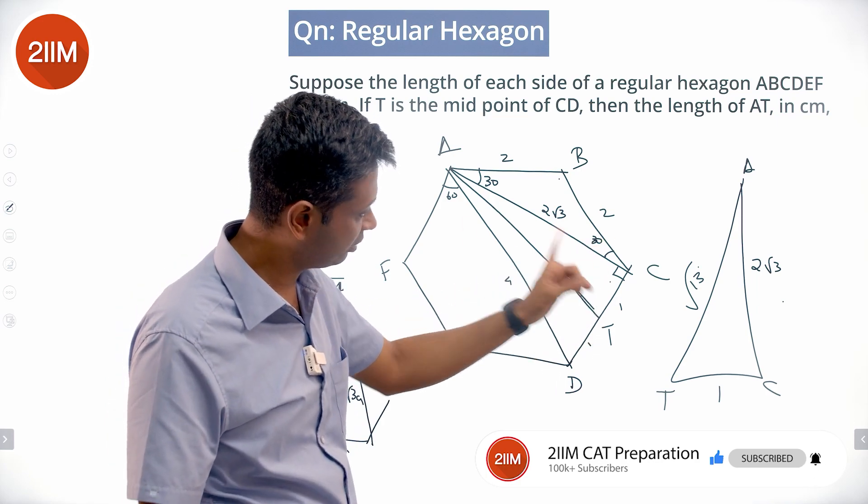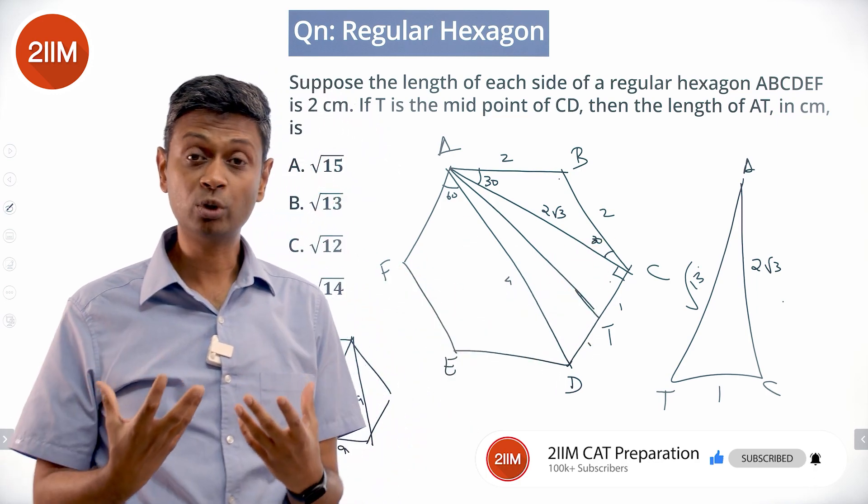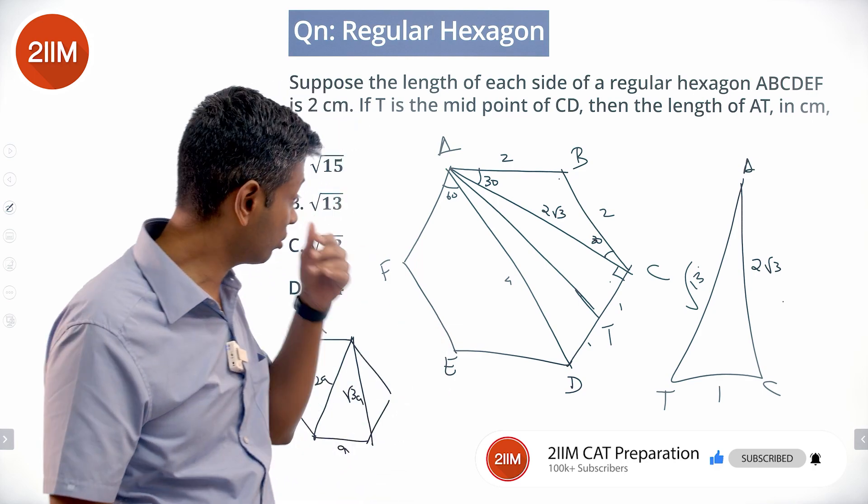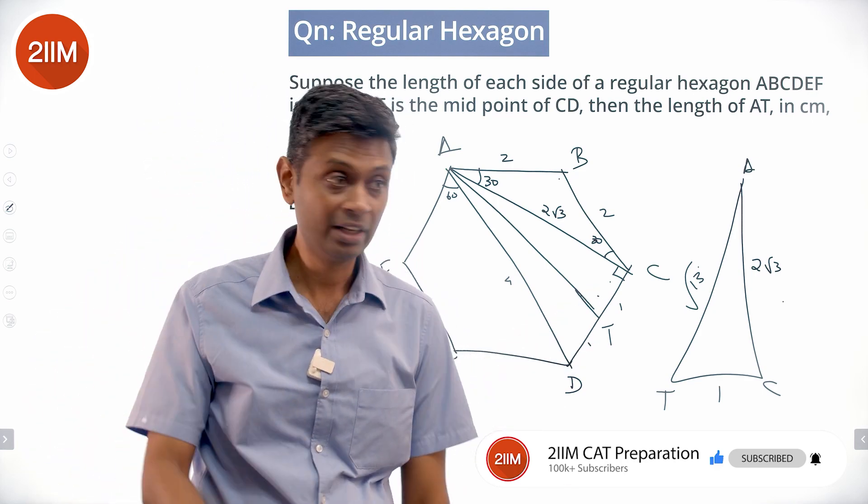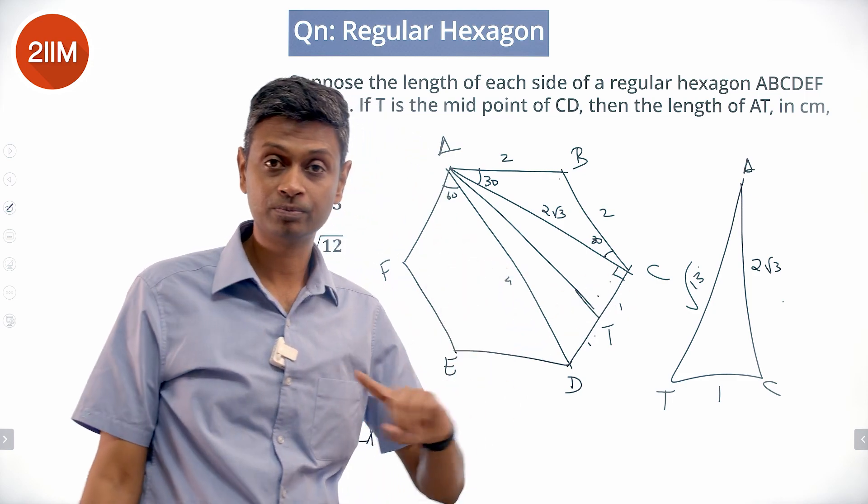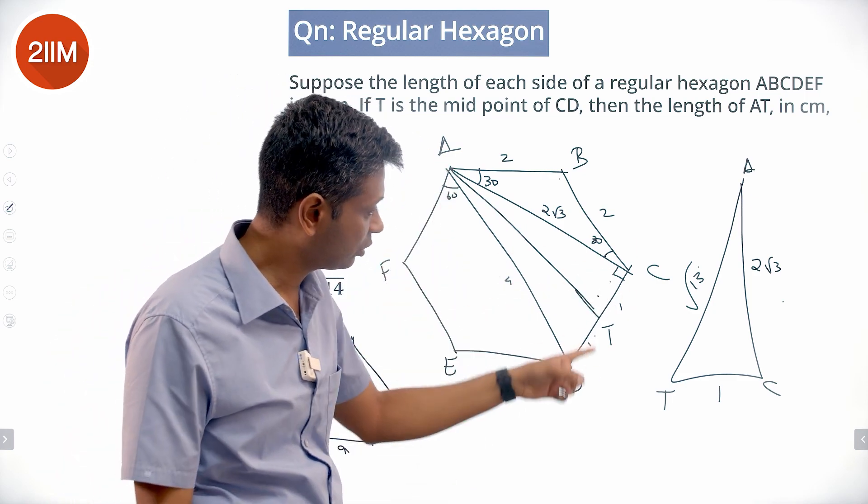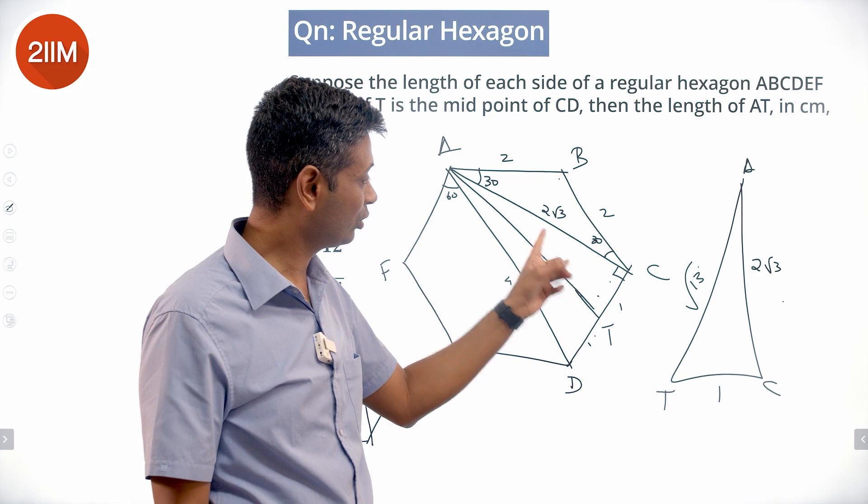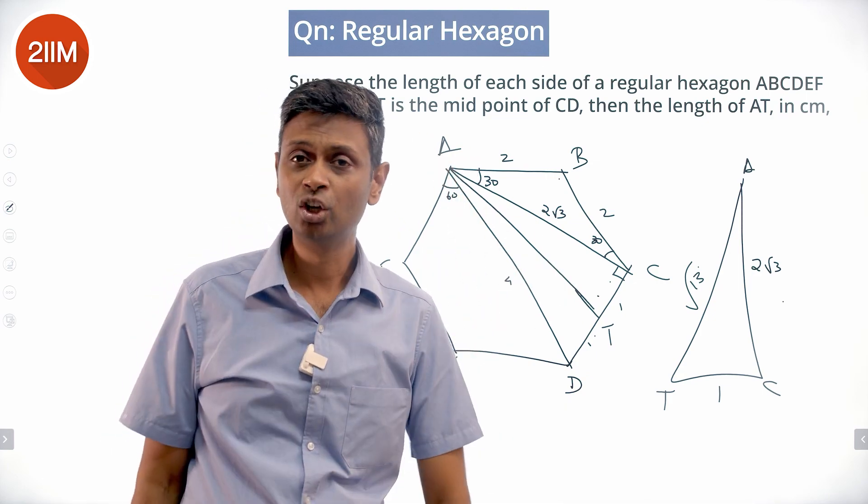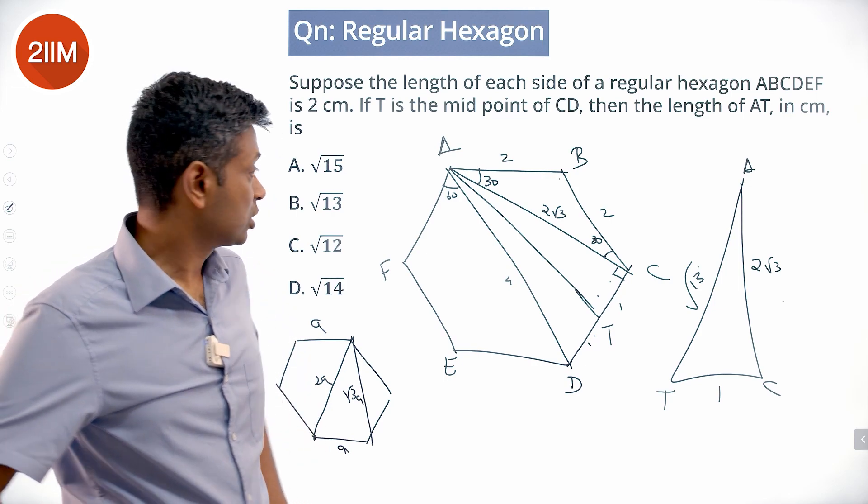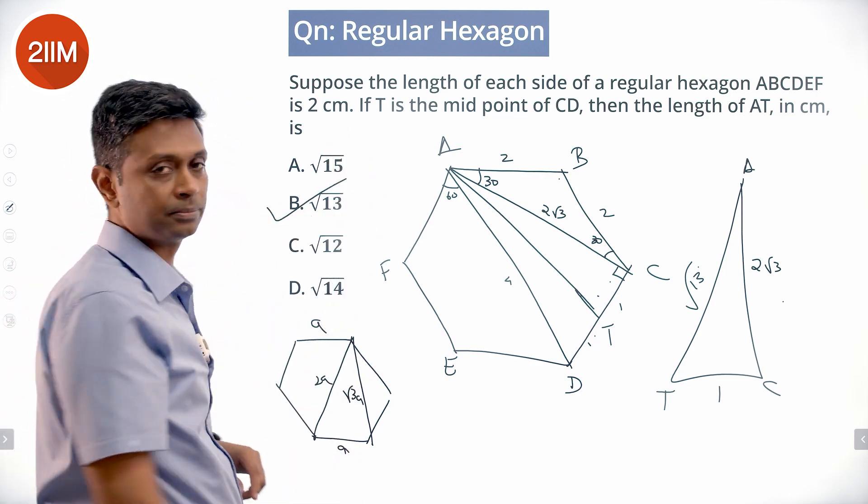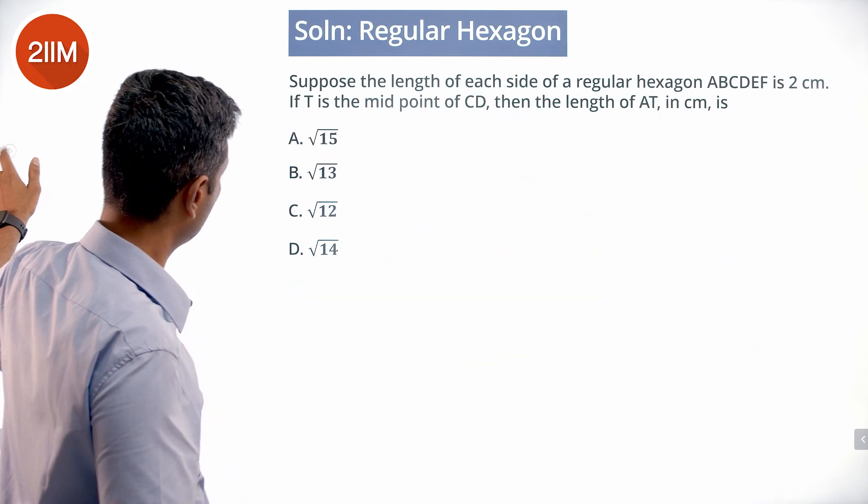This whole angle is 120, this is 30, this is 90. Where I made the mistake: I kept thinking angle ATC is 90, it's not the case. Angle ACT is 90. This is 2√3, this is 1, this is 90. This is the hypotenuse of that triangle. Square root of (2√3)² plus 1², square root of 12 plus 1, root 13. Done. I did all kinds of nonsense for this question.